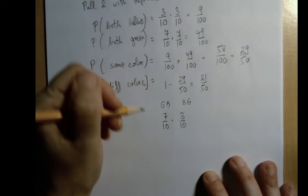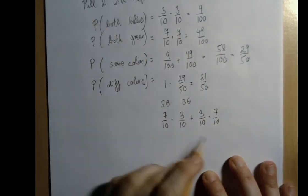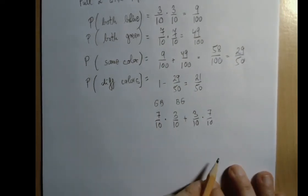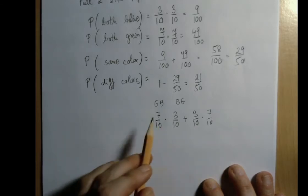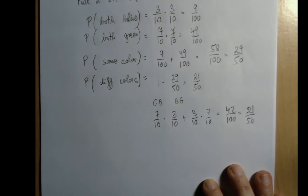And so a green is 7 out of 10, a blue is 3 out of 10, and blue-green is just the other way around. But luckily, multiplication is commutative, so it doesn't matter what order we see the factors, the product is the same. So we have 21 plus 21, that's 42 over 100, which is indeed 21 over 50.